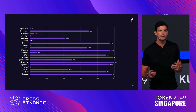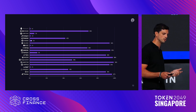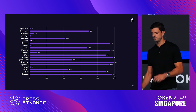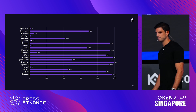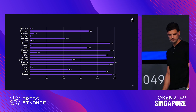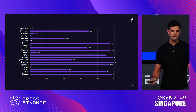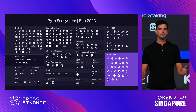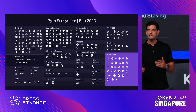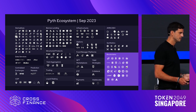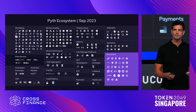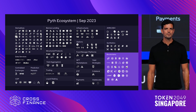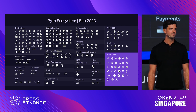Here you can see the growth of this segment of the market that Pyth has been empowering, and where high-throughput as a trend is emerging across blockchains where Pyth is prevalent. The Pyth ecosystem shows that DeFi is in fact looking for high-throughput, trustworthy, low-latency oracles. Thanks for the time.